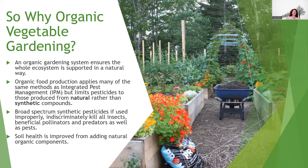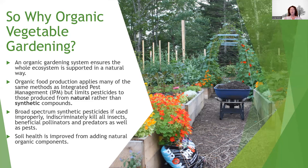Why organic vegetable gardening? It's going to ensure that the ecosystem is supported — that's probably the main reason most people want to do it. These products tend to break down quicker. Organic food production uses a lot of IPM and limits your pesticides to natural rather than synthetic options. Broad-spectrum synthetic pesticides can kill all sorts of things — the good bugs and the bad bugs — and could injure you, pets, and kids. While they're very valuable if you know how to use them, a lot of people don't. Always follow labels. Soil health is also improved by adding natural components and supporting the natural biome.